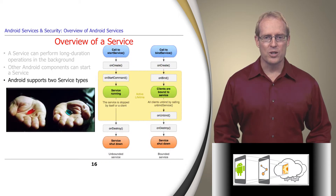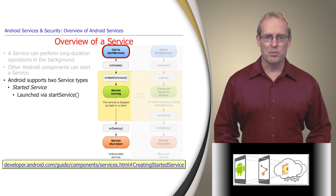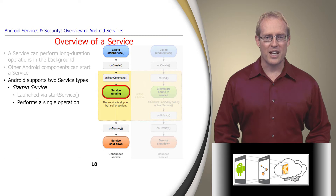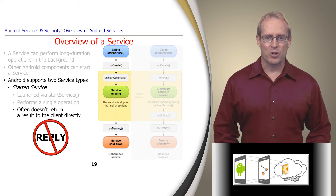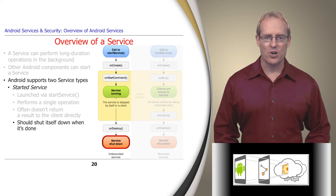Android supports two different types of services. A started service is launched when a client calls startService. It usually performs a single operation on behalf of the client that started it, and often does not return a result to the client. A started service needs to shut itself down explicitly after completing the operation the client directed it to perform, since its lifecycle is independent of the client that started it, so it can run in the background indefinitely.